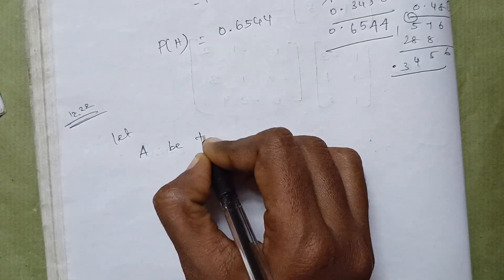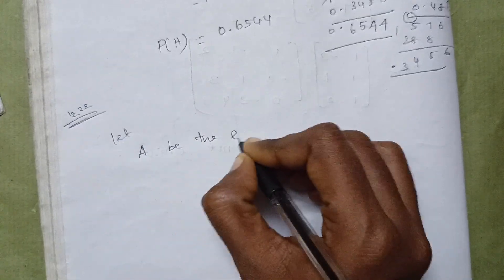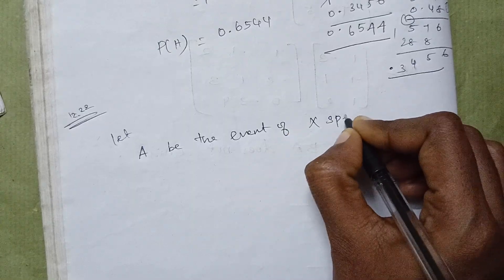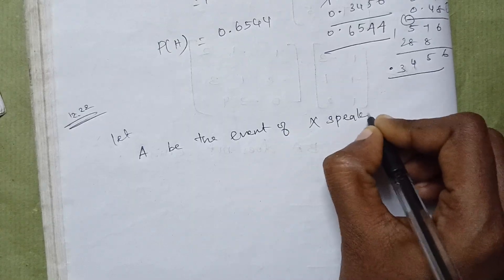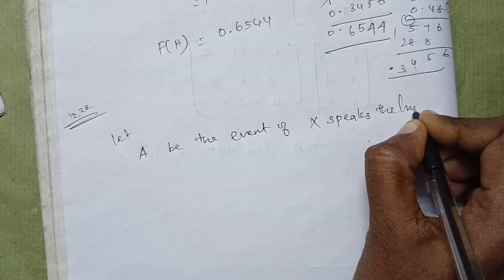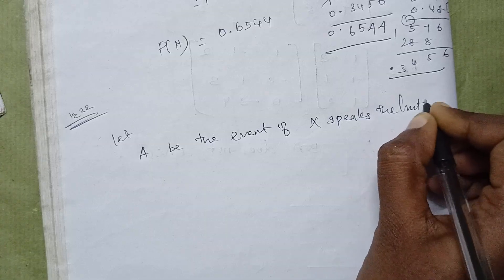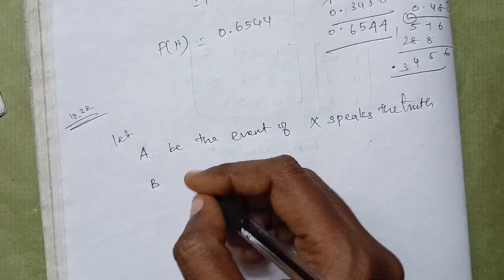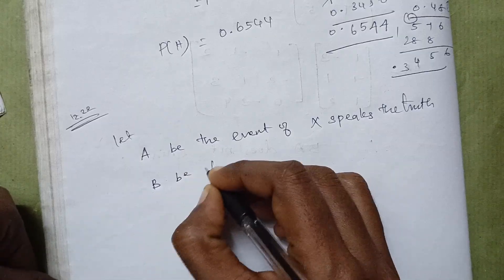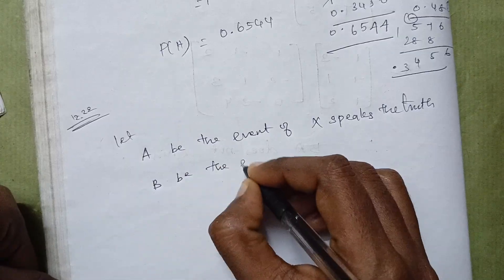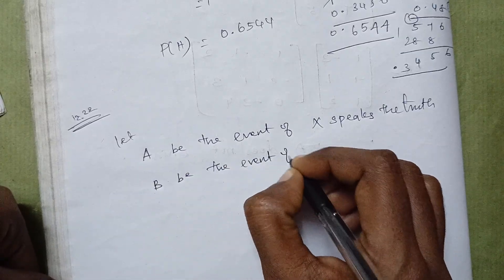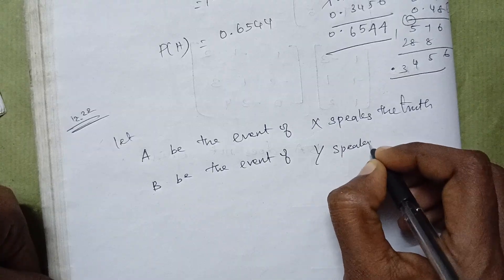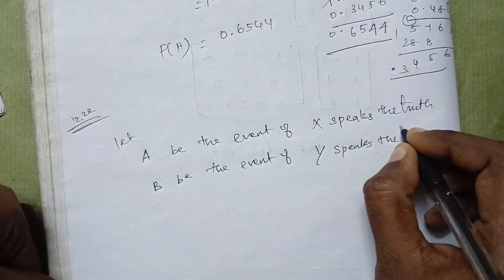Let's see the points of predictions. Let A be the event of X speaks the truth, and let B be the event of Y speaks the truth.